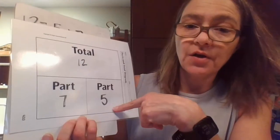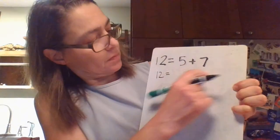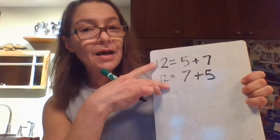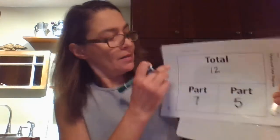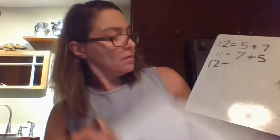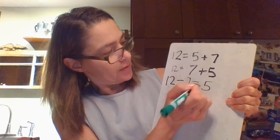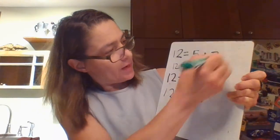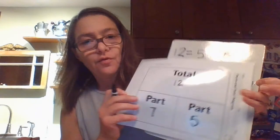So 12 equals 5 plus 7 because the total is 12 and the two parts are 5 and 7. Now we flip it and make our turnaround fact: 12 equals 7 plus 5. Those are our two additions. Now we do two subtraction facts: 12 minus 7 equals 5, and 12 minus 5 equals 7. That is your fact family — 7 plus 5 equals 12.